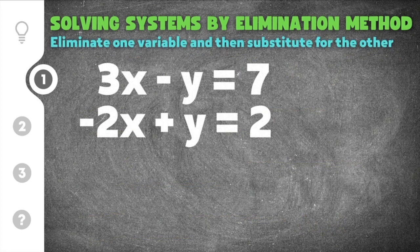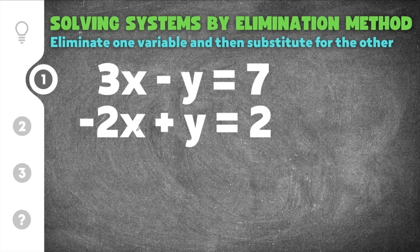Let's get started on our first practice problem on solving systems by elimination. This first system gives us two equations: 3x minus y equals 7, and negative 2x plus y equals 2. We're going to evaluate the system and see if we need to multiply either equation so that when you add straight down, one of the variables will cancel. In this case, I can tell by looking at the y's that they will cancel without having to multiply at all.